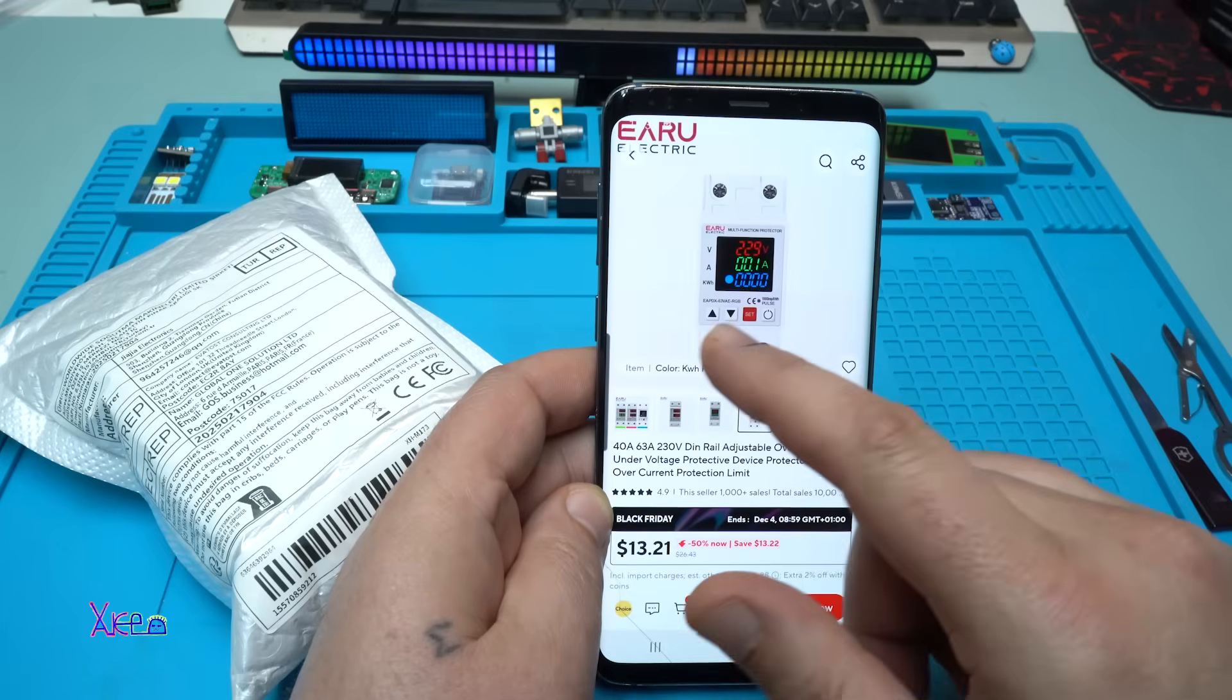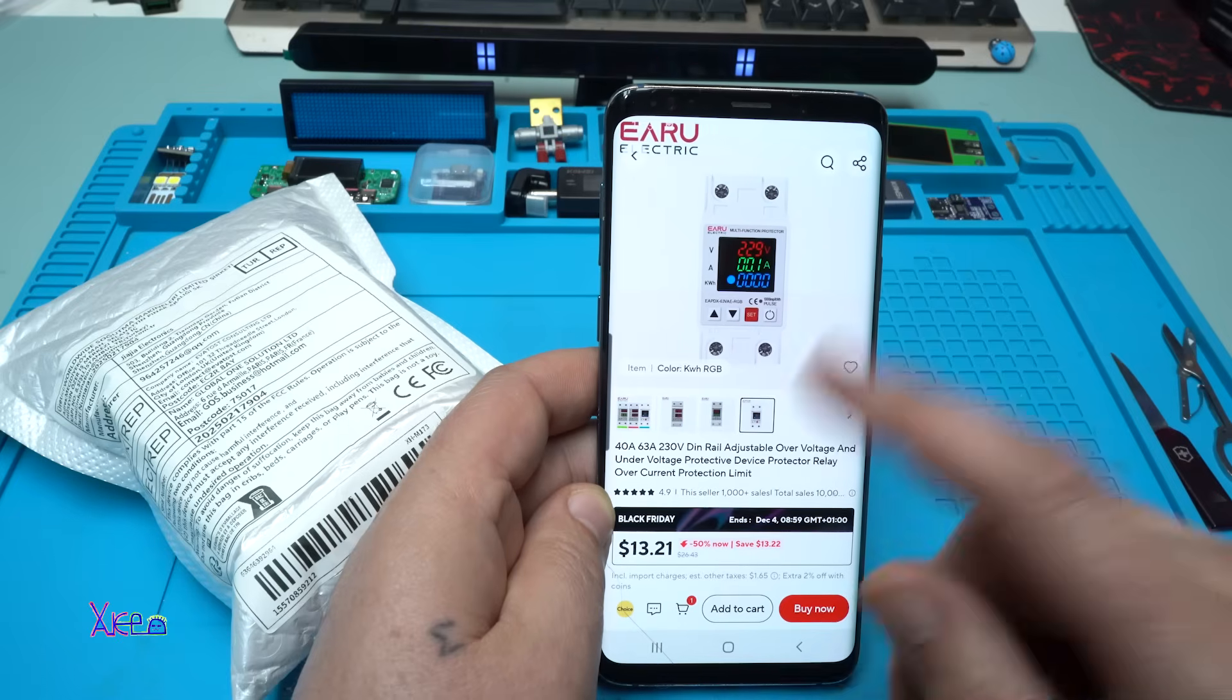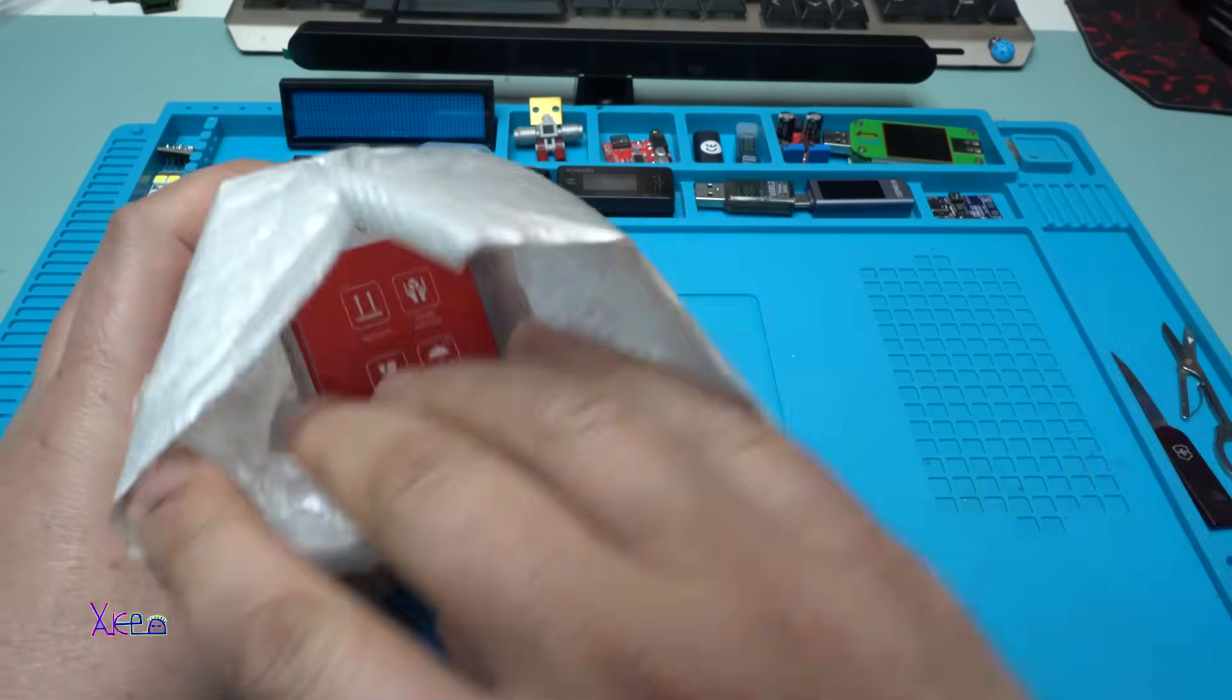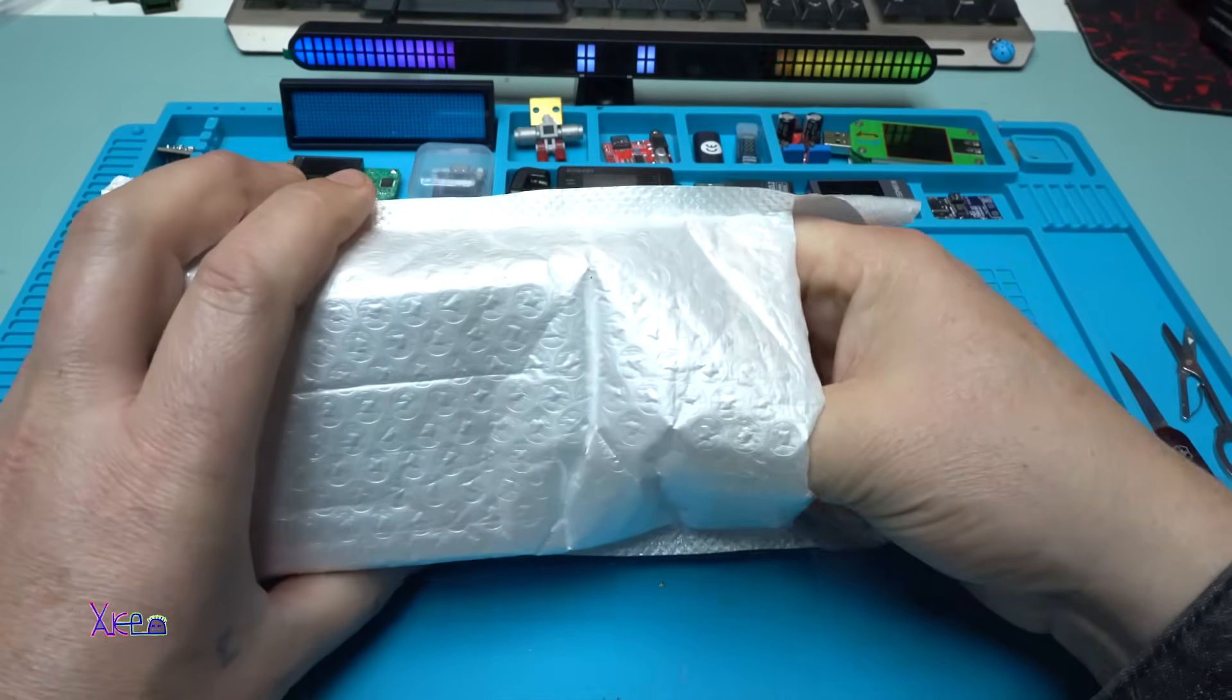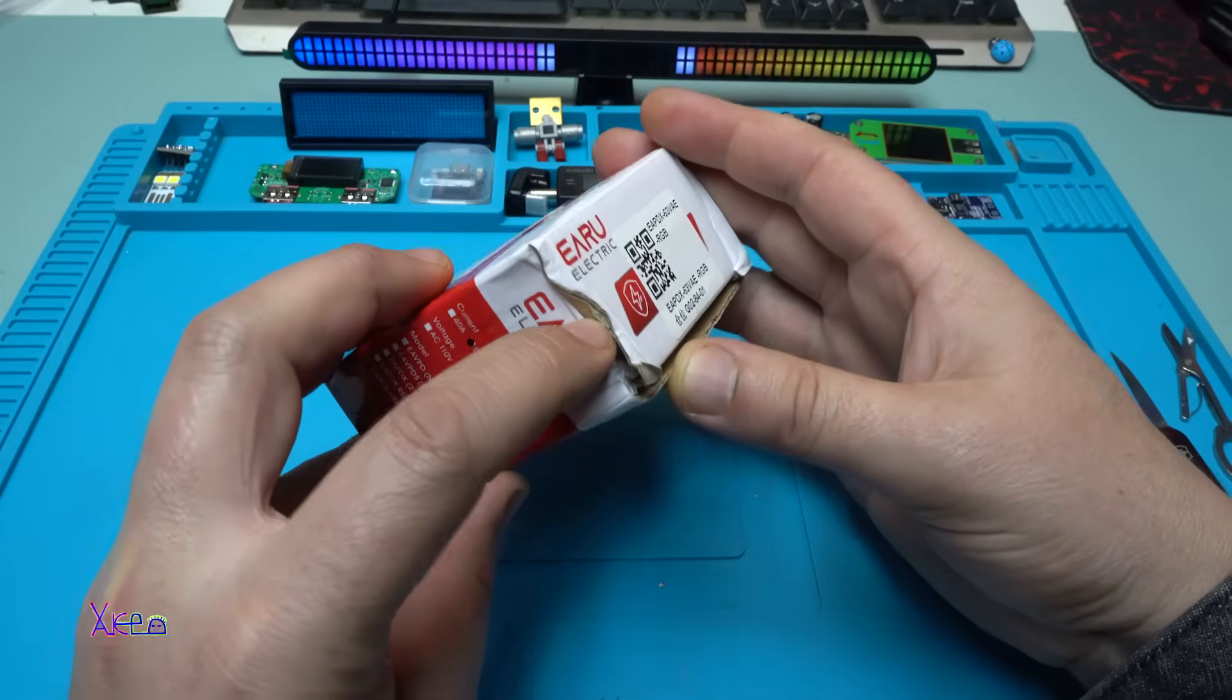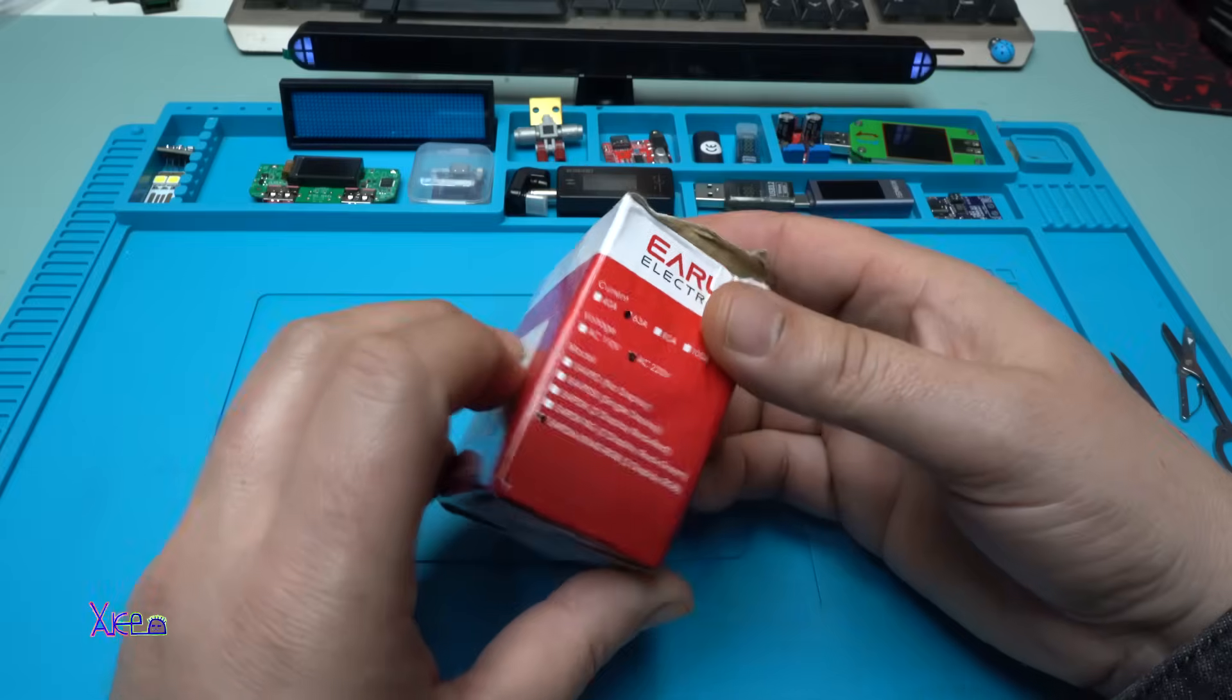And I have chosen the best one with 63 amperes and all the functions. I ordered it and of course I got it. No bubbles, oh, the box is a little bit damaged. Never mind, what does it say?